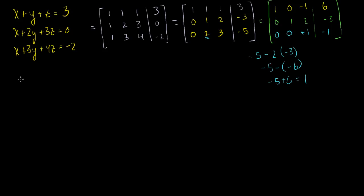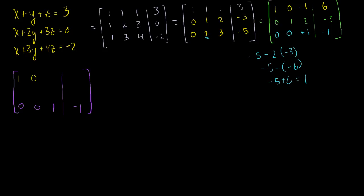I'm keeping my third row the same: 0, 0, 1, minus 1. Now I want to zero out the z-entry in the first row. I'll set the first row equal to the first row plus the last row: 1 plus 0 is 1; 0 plus 0 is 0; minus 1 plus 1 is 0; and 6 plus minus 1 is 5. So the first row becomes 1, 0, 0, 5.